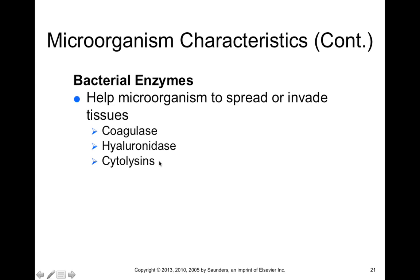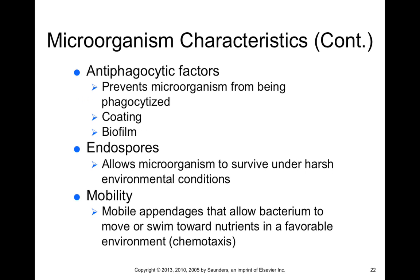Hyaluronidase is involved with breaking down tissues and helping bacterial spread. Cytolysin can break apart cells and help bacterial cells spread throughout a given tissue. Some bacteria can also produce antiphagocytic factors, which confer resistance to phagocytosis — the process where immune cells engulf and degrade foreign microorganisms using a phagolysosome. Antiphagocytic factors include coatings or biofilms that prevent phagocytosis by the immune system.